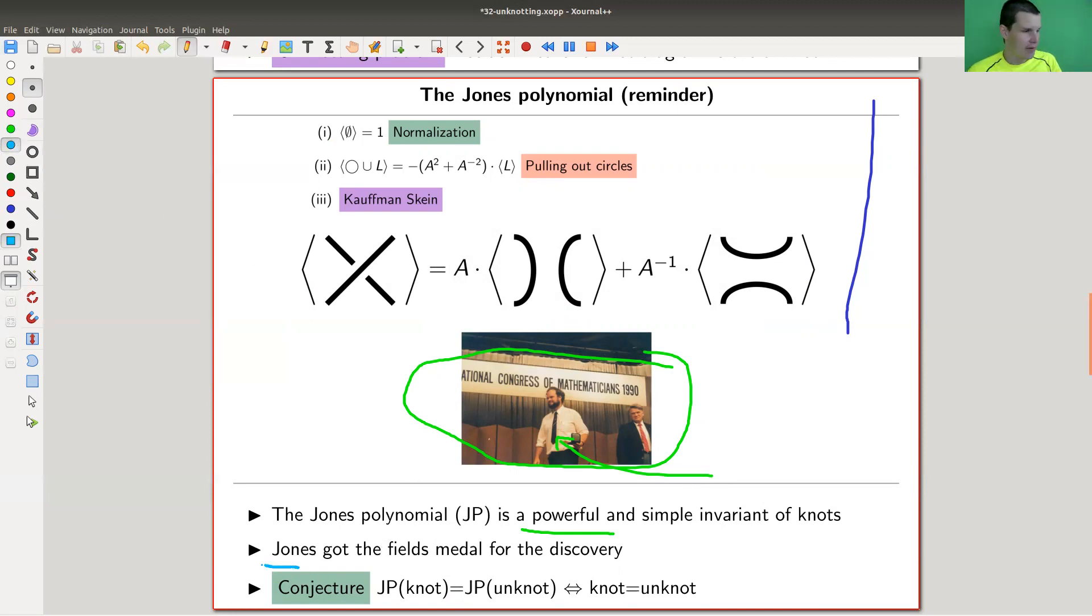It's so ridiculously powerful that people conjectured very early on - conjecture is still open - that the Jones polynomial actually can detect the unknot, which would be a fantastic result. So Jones polynomial of unknot equals Jones polynomial of knot if and only if knot equals unknot. By knot, I mean knot diagram. It's a ridiculously powerful statement.